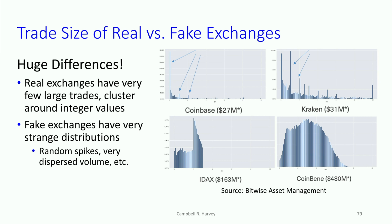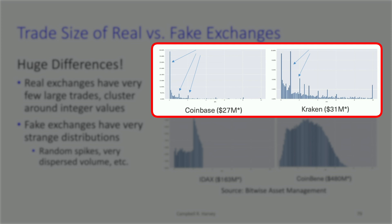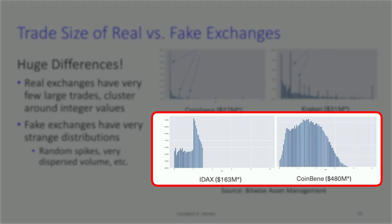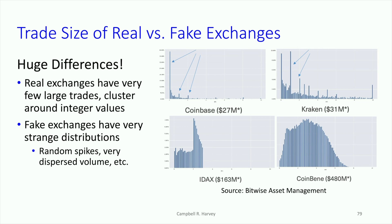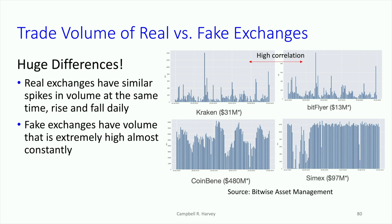Looking at trade sizes: on legitimate exchanges like Coinbase and Kraken, most volume comes from smaller trades, with volume declining for larger trades — exactly what we'd expect. The spikes you see for Coinbase and Kraken correspond to round numbers like one, two, or three ether. The two suspicious exchanges on the bottom, which claim very large volume, look completely different — their trade size distributions have no economic foundation. This is another red flag.